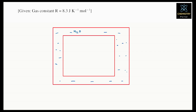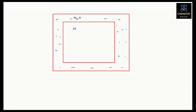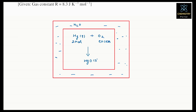In the bomb calorimeter we are doing combustion of mercury gas — not liquid — mercury gas. Mercury gas and O₂ are in excess, and after combustion it forms HgO solid.